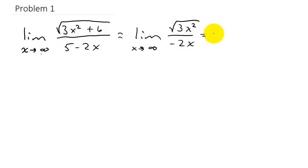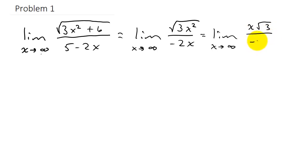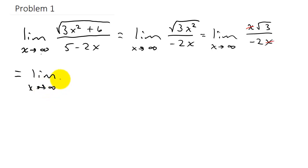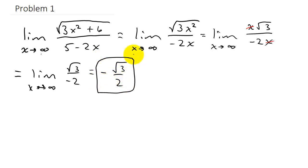So now we get the limit as x goes to infinity. Since 3 is not a perfect square, it stays underneath the radical. And since x is positive because we're going to positive infinity, the square root of x squared is just x. So we get x times the square root of 3 over negative 2x. The x's cancel, leaving the limit of the square root of 3 over negative 2, which equals negative square root of 3 over 2.